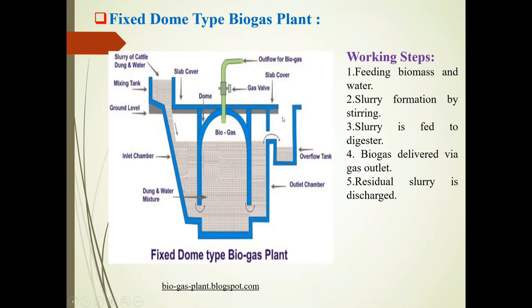This is the ground level; the underground portion is below. There is an inlet chamber where the dung and water mixture enters. The biogas dome is of dome type with a slab cover. This pipe is the outlet pipe for biogas outflow. There is also a gas wall, an overflow tank, and an outlet chamber. These are the parts of this biogas plant.